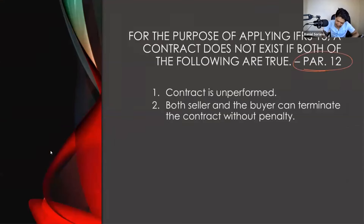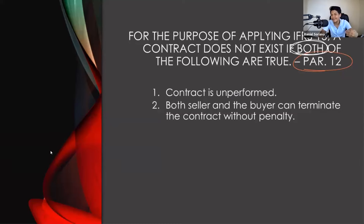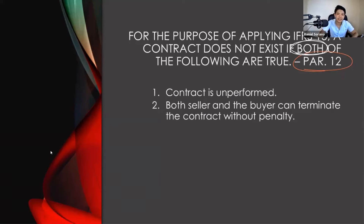According to paragraph number 12, a contract does not exist if both of the following are true: first, the contract is unperformed — meaning neither the buyer has paid nor the seller has delivered; and second, both the seller and buyer can terminate the contract without penalty. If both conditions are present, the contract is still not in existence and no revenue will be recognized.